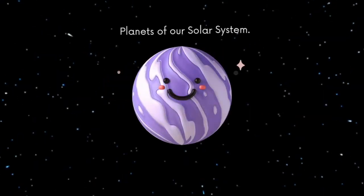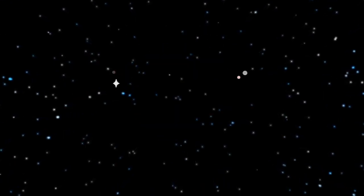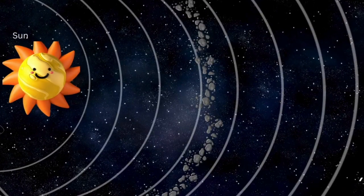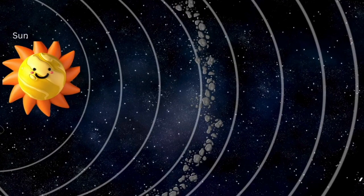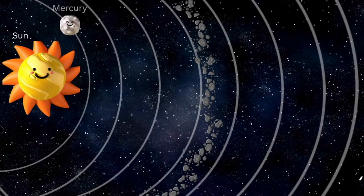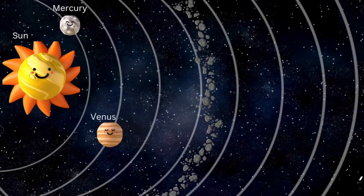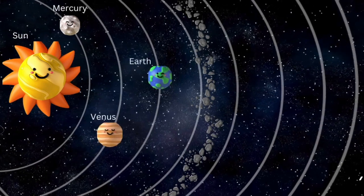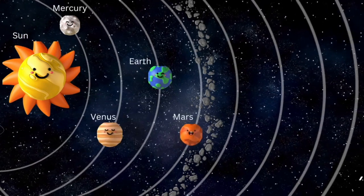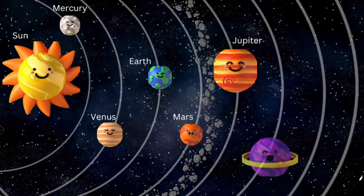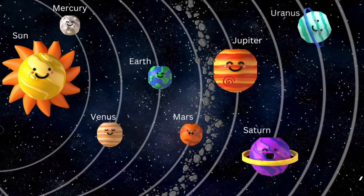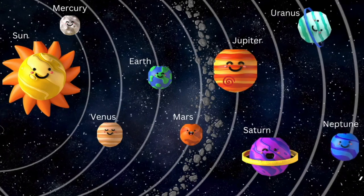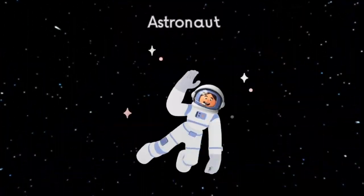So kids, did you have fun learning about the planets of our solar system? Come on now, join me and repeat the planets after me: Mercury, Venus, Earth, Mars, Jupiter, Saturn, Uranus, and Neptune. Great job!